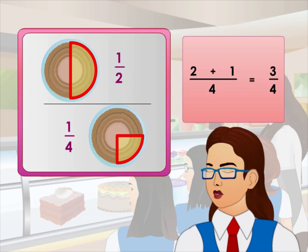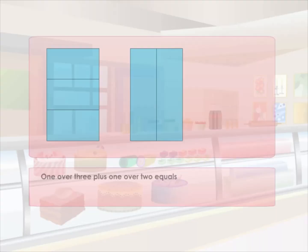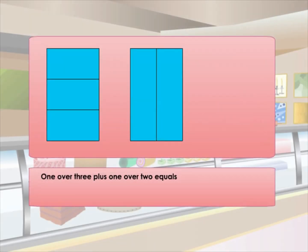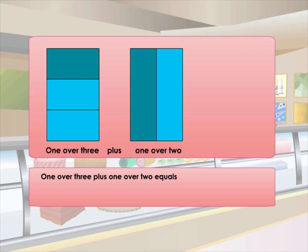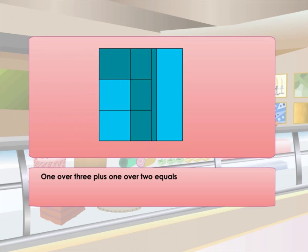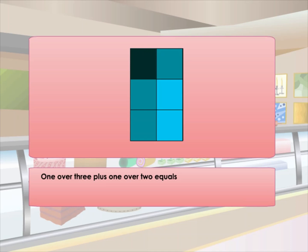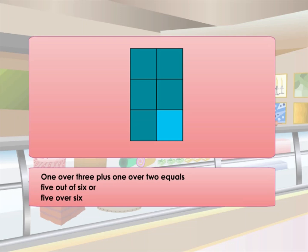I understand now, Mom. Thank you. Let's explore further. What is one over three plus one over two? First, shade one part of three in the diagram. Shade another one half of two. To show the addition, overlap the one half diagram over the one third diagram. Shade one part of the overlapped section. The total shaded parts are five out of six, or five over six.